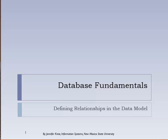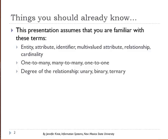This is the fourth in a series of videos about database fundamentals, and we're going to spend a little more time talking about relationships. For this video, we assume you are already familiar with the terms entity, attribute, identifier, multi-valued attribute, relationship, cardinality, one-to-many, many-to-many, one-to-one, and degree of the relationship — which is unary, binary, or ternary.